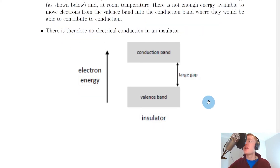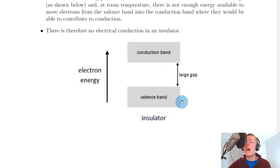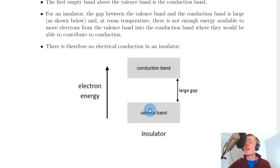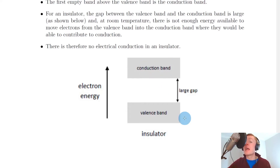Here's the energy diagram for an insulator. The valence band and conduction band are separated by a large gap, which means the electrons in the valence band will never be able to get enough energy to move across the band gap into the conduction band. This means the valence band always stays full and the conduction band stays empty, so no conduction takes place in an insulator.